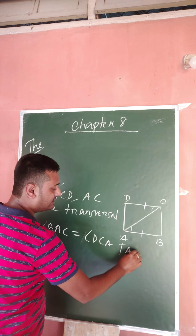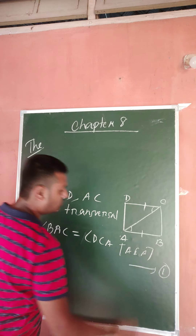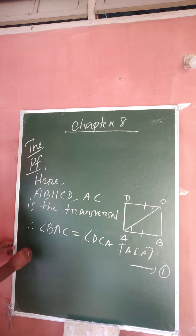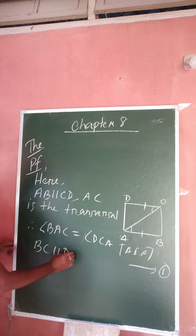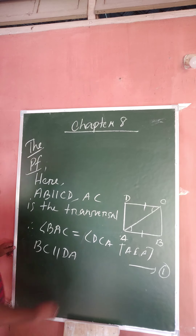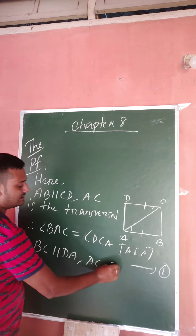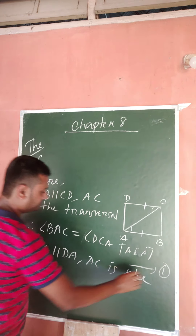Therefore, angle BAC is equal to angle DCA — these are alternate interior angles. Let's mark this as statement one. Similarly, BC is parallel to DA, and AC is again the transversal.